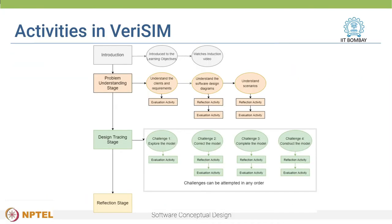The activities in VeriSim are as follows. You will first be introduced to what VeriSim is and what the learning objectives are. Then you will move on to the problem understanding stage, where the requirements and the design diagrams for the automated door locking system will be given to you. The next stage is the design tracing stage, where you will attempt different challenges to construct the state diagram — and these challenges can be attempted in any order. Finally, you will go through the reflection stage, which will help you reflect on what you have learnt in VeriSim. After each of these activities, there are evaluation as well as reflection activities to consolidate your learning.